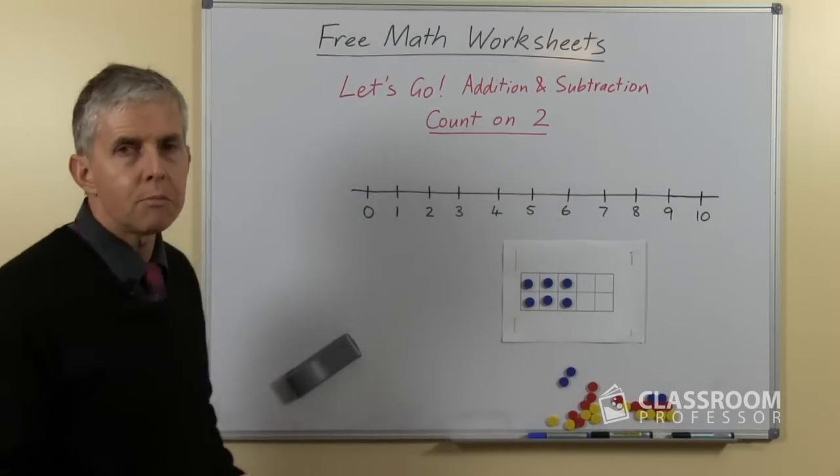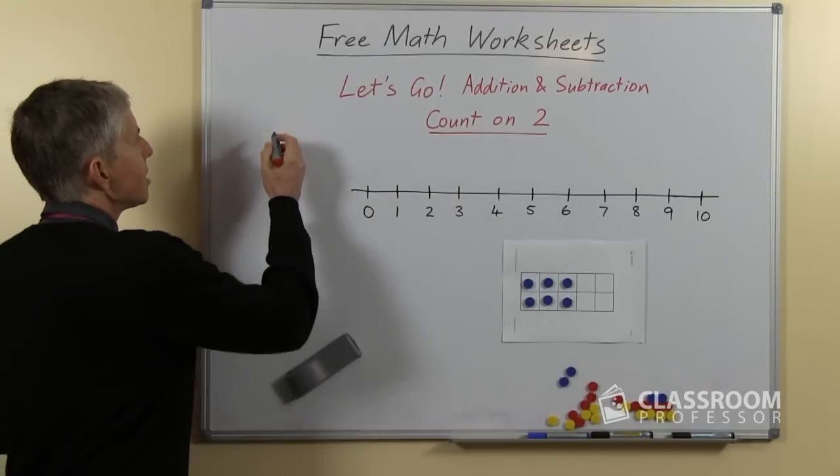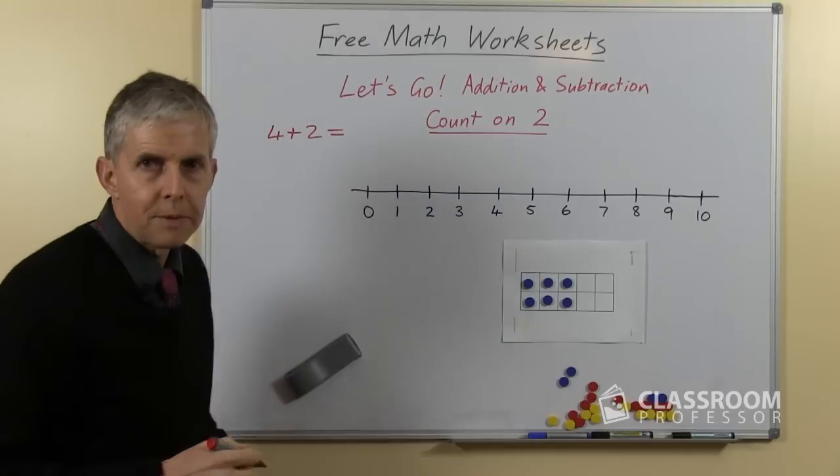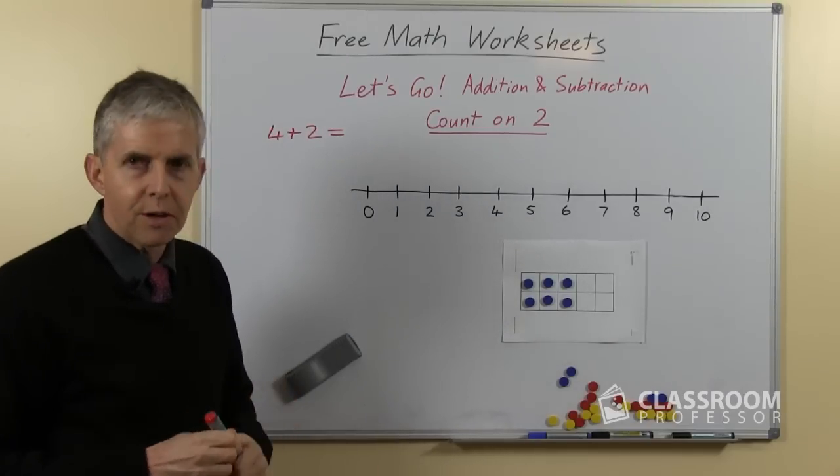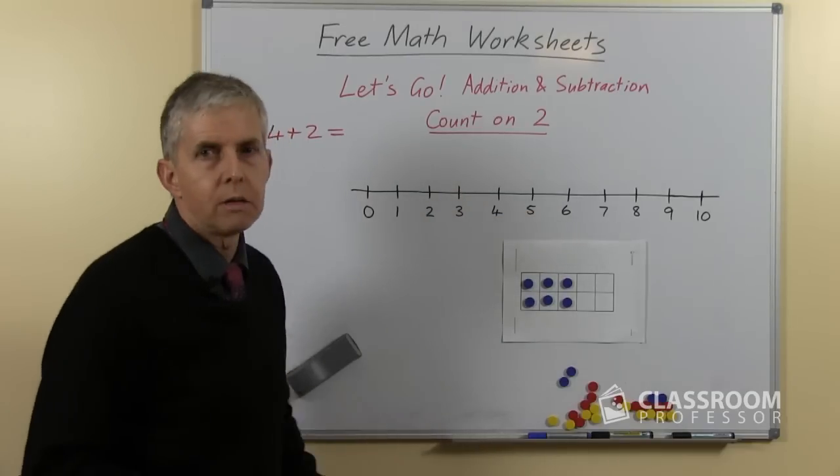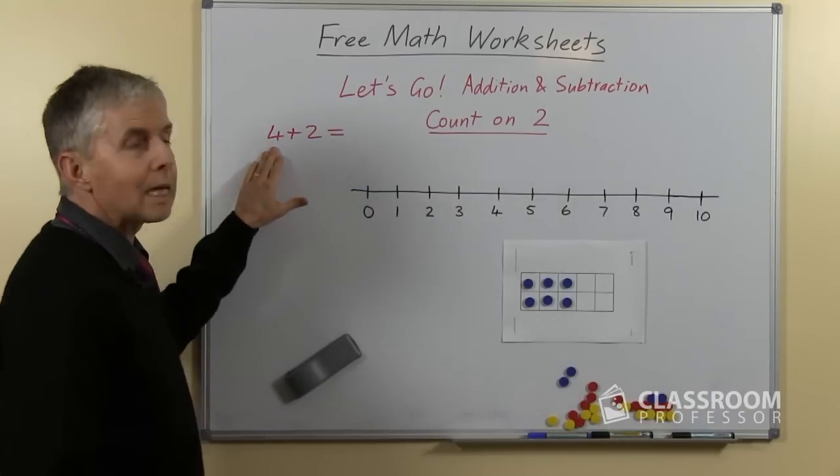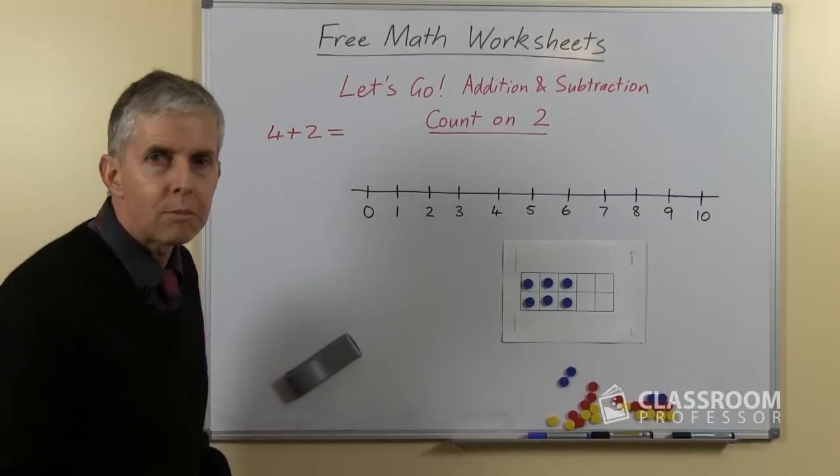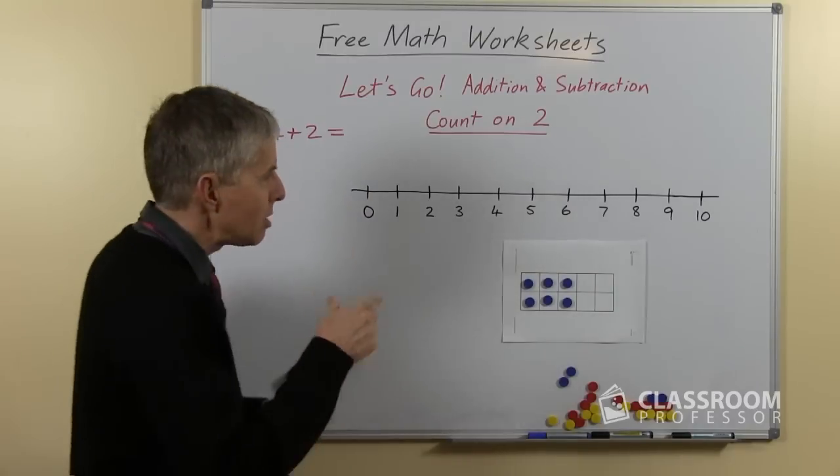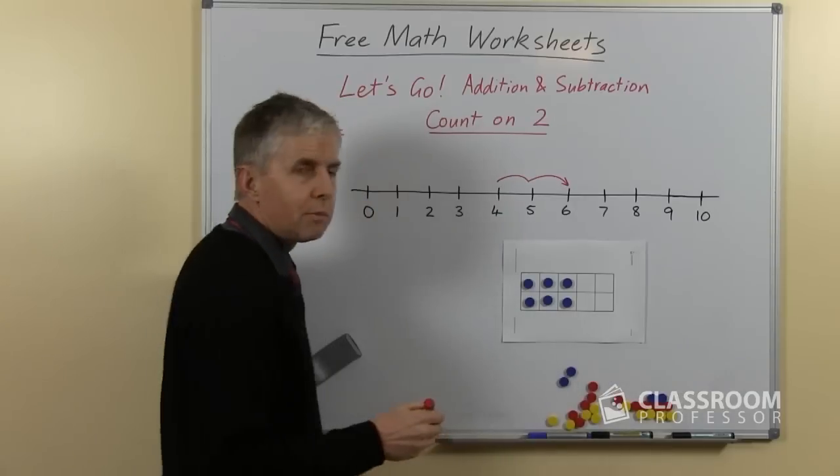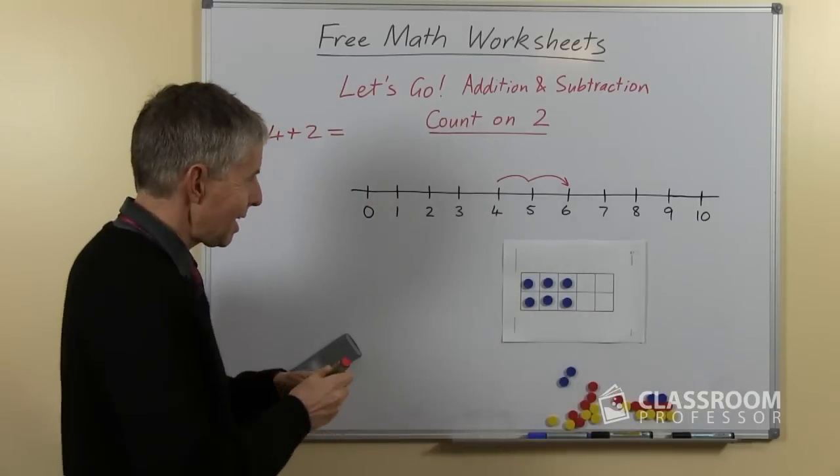So let's start with the number line and let's look at the question 4 plus 2 equals. This is a nice easy number fact and using the number line I'm sure you won't find it difficult. We're going to start with 4 and then count on 2. Look at the number line, find the number 4, imagine the two jumps, you can draw the two jumps if you want to. What number do we get to? Of course it's 6.